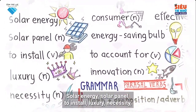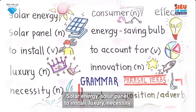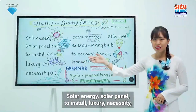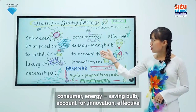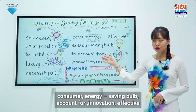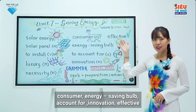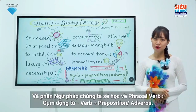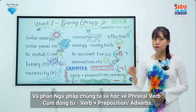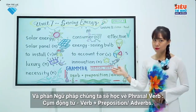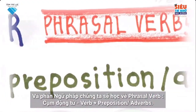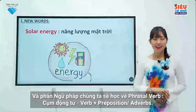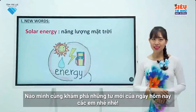New vocabulary includes: solar energy, solar panel, to install, luxury, necessity, consumer, energy saving bulb, account for, innovation, and effective. About grammar, today we will study phrasal verbs — verb plus preposition or adverbs. Dear students, let's start to uncover the new words.